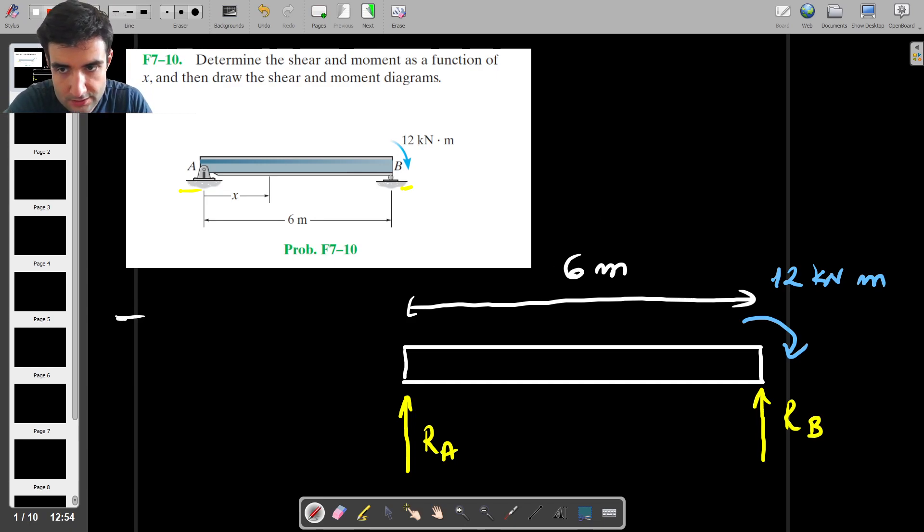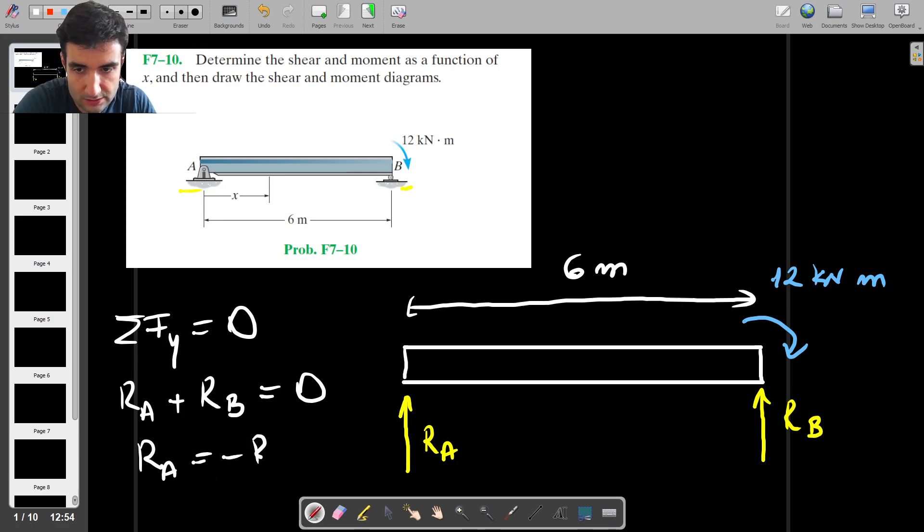As usual, I'll start by saying that the sum of forces in the y direction has to be equal to 0. We have RA and RB, and that's it. There's no external force, so we have RA plus RB is equal to 0, and then RA is equal to minus RB. So the two forces are equal to each other, but they're acting in opposite directions.